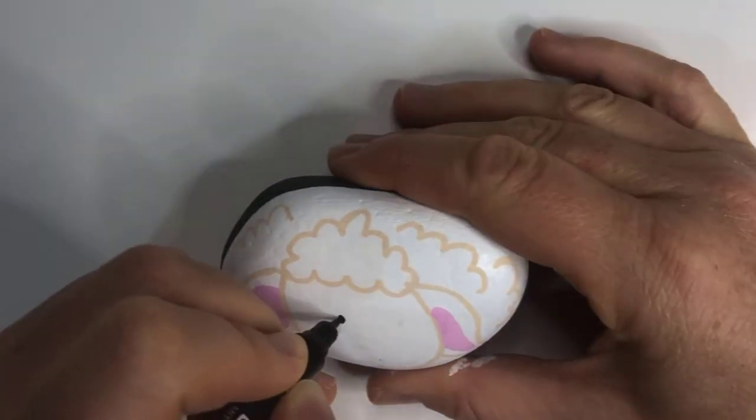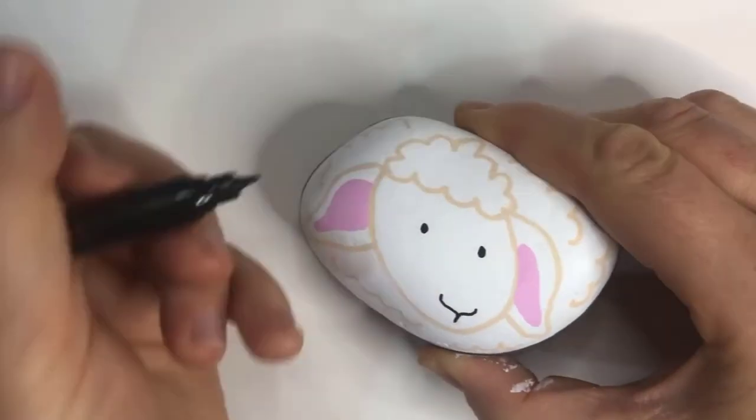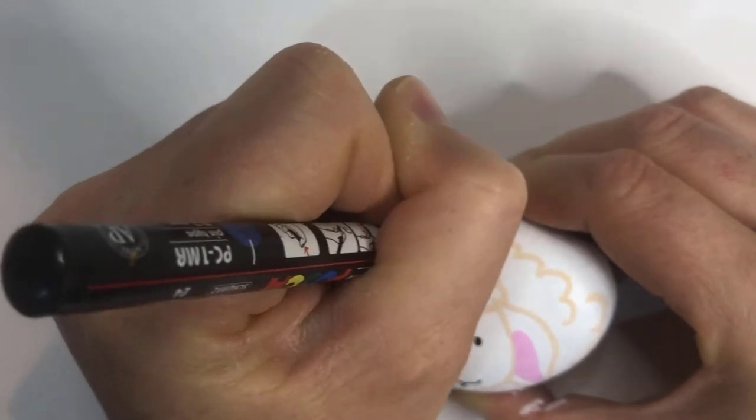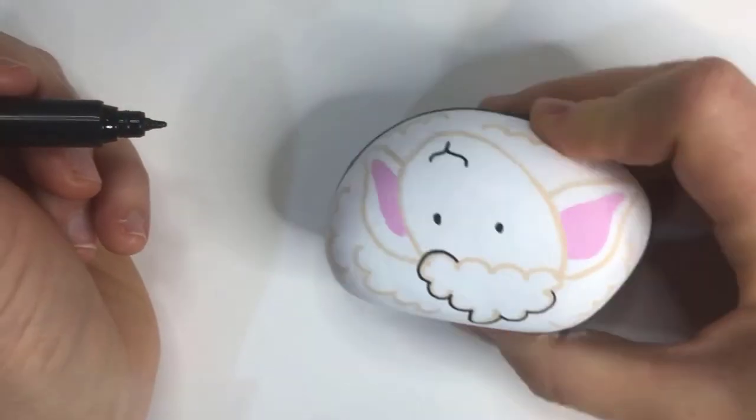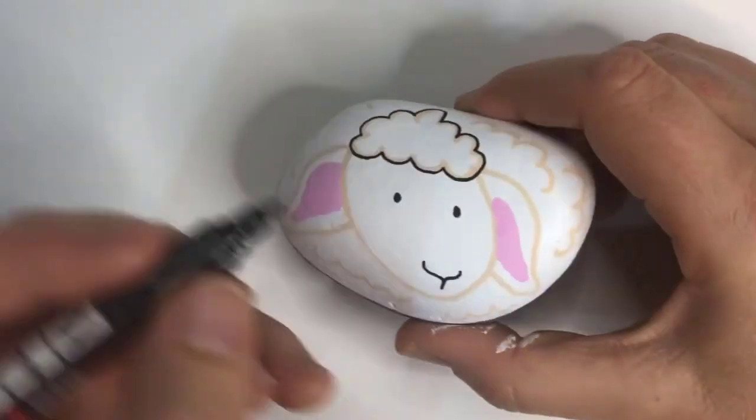Now once everything is painted, I use my black PC-1MR paint pen to do the outlining. This is when the painting will really start to come together but it's also the stage where you may feel a bit nervous. But don't worry, if you make mistakes, they're very easy to fix and the more relaxed you are, the easier you will find this.